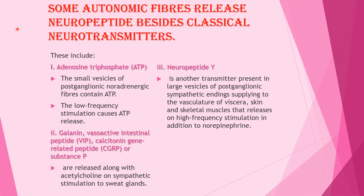Some autonomic fibers release neuropeptides besides the classical neurotransmitters. First, adenosine triphosphate (ATP) is found in small vesicles of postganglionic noradrenergic fibers and is released on low-frequency stimulation. Second, galanin, vasoactive intestinal peptide (VIP), calcitonin gene-related peptide, and substance P are released along with acetylcholine on sympathetic stimulation to sweat glands. Third, neuropeptide Y is present in large vesicles of postganglionic sympathetic endings supplying the vasculature of viscera, skin, and skeletal muscles, and is released on high-frequency stimulation in addition to norepinephrine.